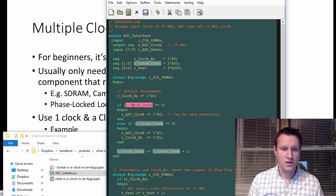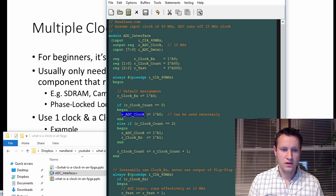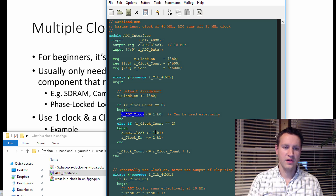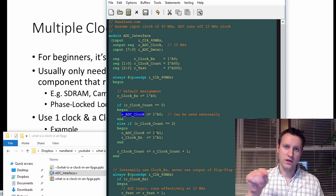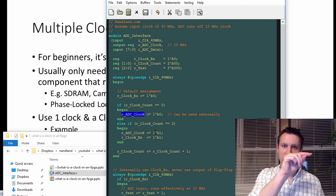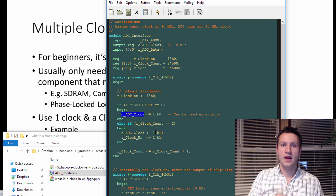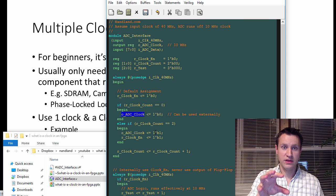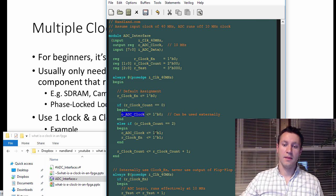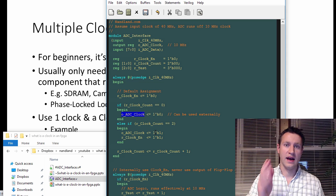Else, if it's equal to two, I'm going to set it to one. So, this means that when clock count is zero and one, ADC clock is going to be low, and when clock count is two and three, ADC clock is going to be high. So, what this means is that you're going to go zero, one, low, two, three, high. What that's going to do is it's going to take the 40 megahertz main clock of your FPGA and generate a 10 megahertz signal that's going to be used to drive the ADC.